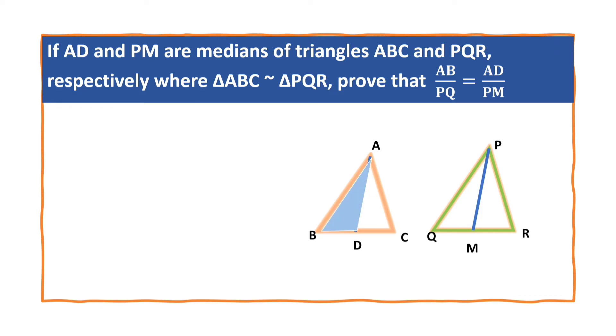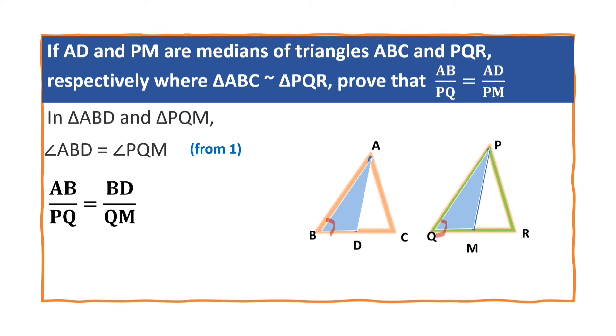Now in triangle ADB and PQM, what we have? Angle ABD is equal to angle PQM from equation 1. And also AB by PQ is equal to BD by QM from equation 2. So now we can say that triangle ABD is similar to triangle PQM by side angle side criterion, SAS criterion.